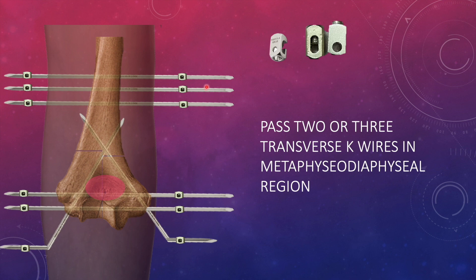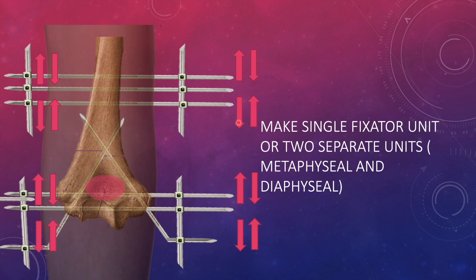For tensioning these wires, you have to go for pre-bending. That means you have to either diverge the wires like this then tighten the clamp or you can converge the wires like this then tighten the clamp. You can go in either way because both of these steps are going to contribute to the tensioning of the wires.